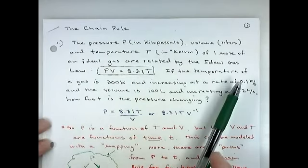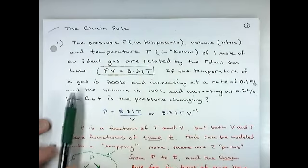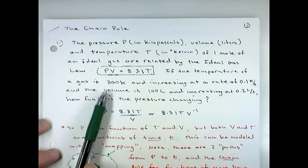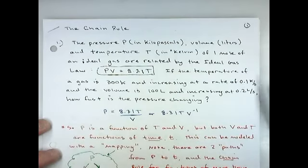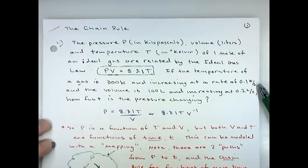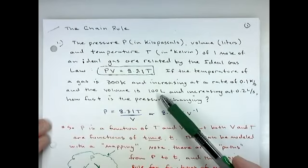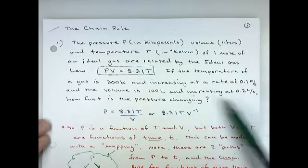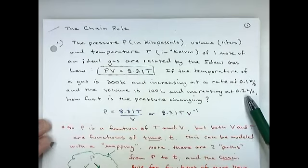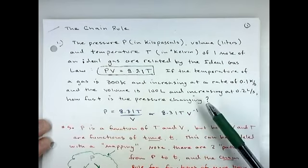Let's say the temperature of our gas is 300 degrees Kelvin and it's increasing at a rate of 0.1 degrees per second, and the volume is 100 liters and increasing at 0.2 liters per second. We want to know how fast the pressure is changing.